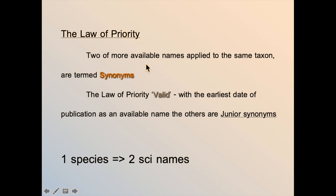If you have a name already, you must have a specimen — we call it a type specimen. The law of priority means that if you and someone else work on species A, whoever can publish earlier, that name will be available. But if there is a second person who published the same paper, it becomes a synonym. This is the law of priority — first come, first served. The second person's work on the same species, if published later, we call it a junior synonym. A synonym means one species has two scientific names.